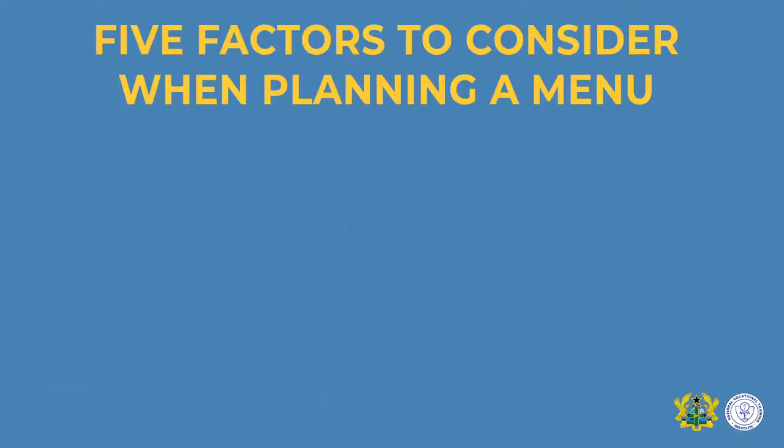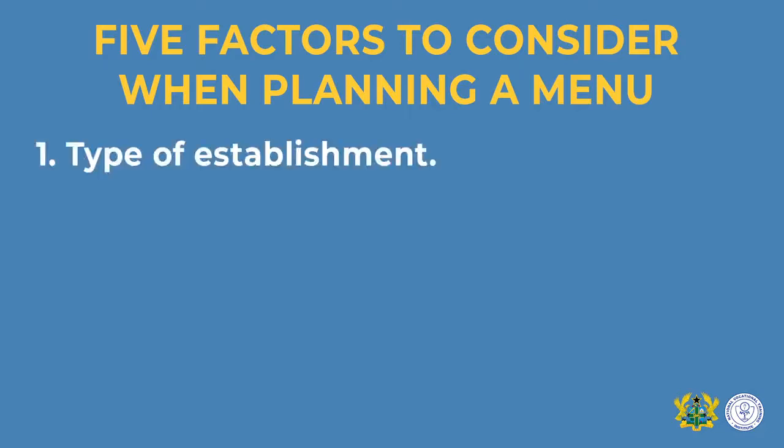Let's look at five factors to be considered when planning a menu. One: the type of establishment. When planning a menu, the type of establishment is very important, as it enables you to know the kinds of people you will be planning for — whether it is a restaurant, prison, or boarding house. You have to factor this in to know your target group.